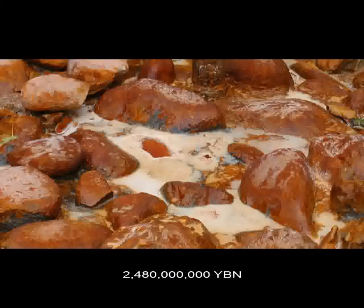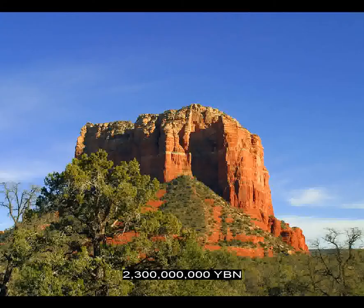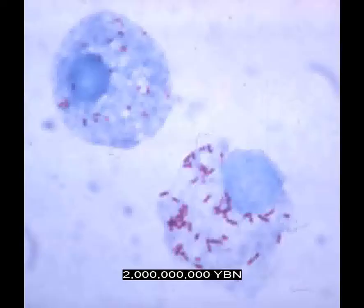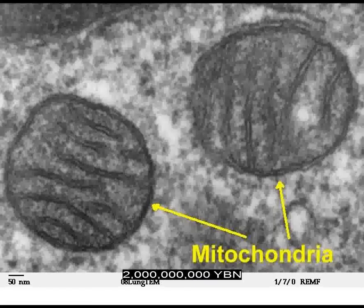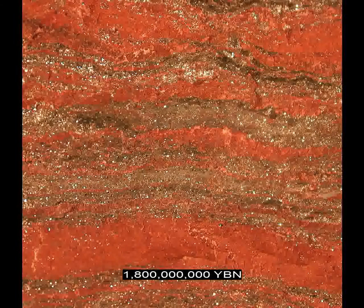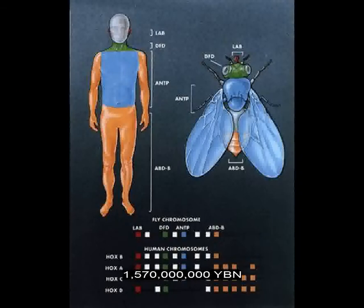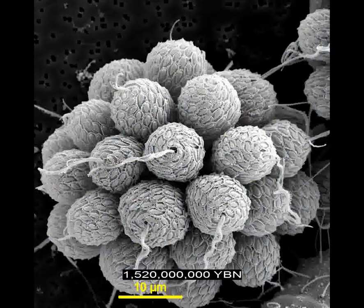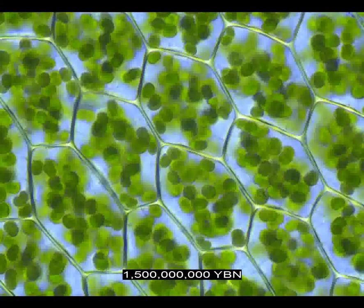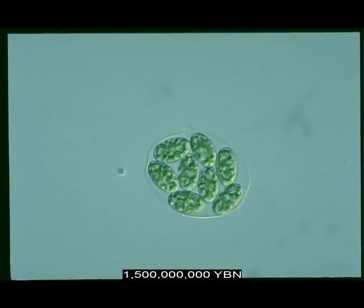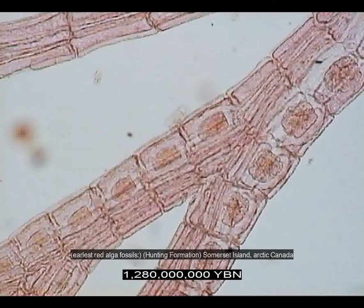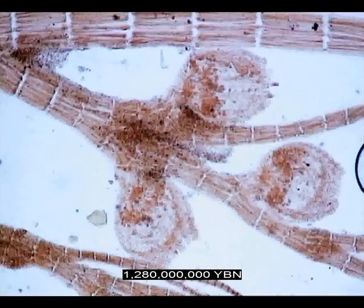Bacteria live on land. Oldest red beds — evidence of free oxygen in the air. A captured bacterium becomes a mitochondrion. End of banded iron formation. Homeobox genes regulate the building of major body parts. Colonialism evolves in eukaryote. Cyanobacteria become plastids in a eukaryotic cell. First plant. Multicellular eukaryotes. Differentiation in multicellular eukaryote. Gamete and somatic cells. Start of death by aging.